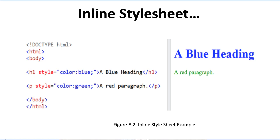We have marked the text of the heading in blue color and we have closed the H1 tag. Now, paragraph P — the style attribute is having color green. The text reads 'a red paragraph,' but we have set the color as green, and here we close the paragraph tag P. Then we close the body tag and then the HTML tag.